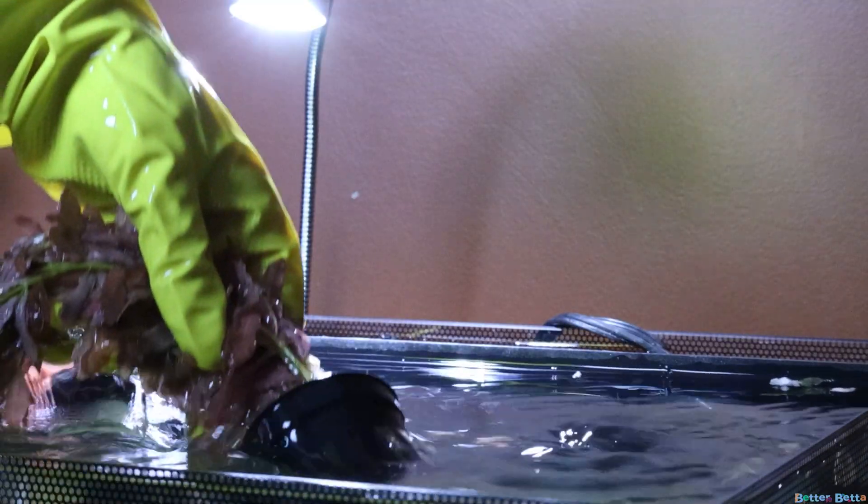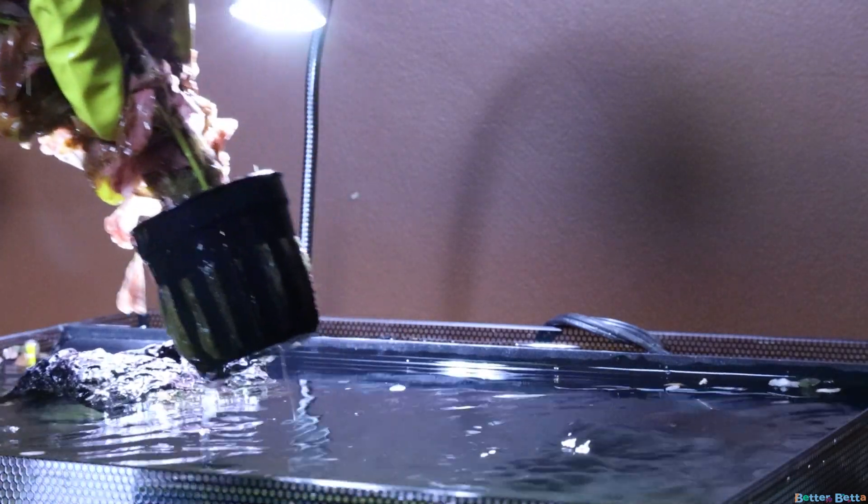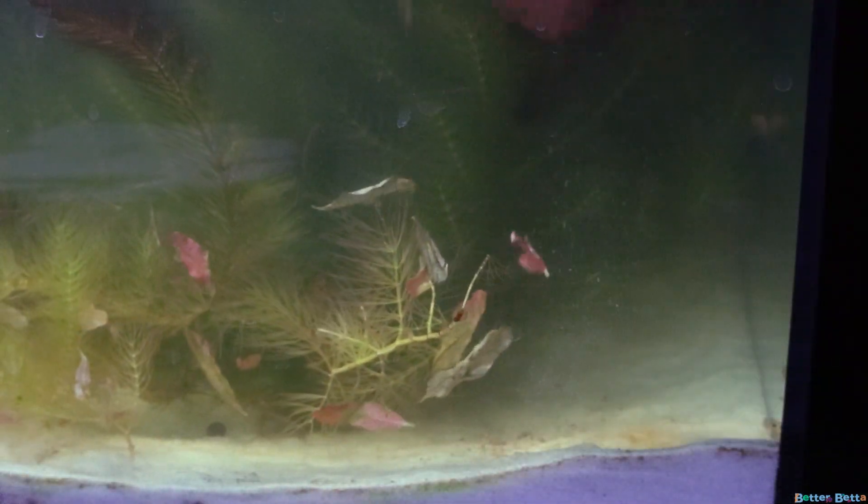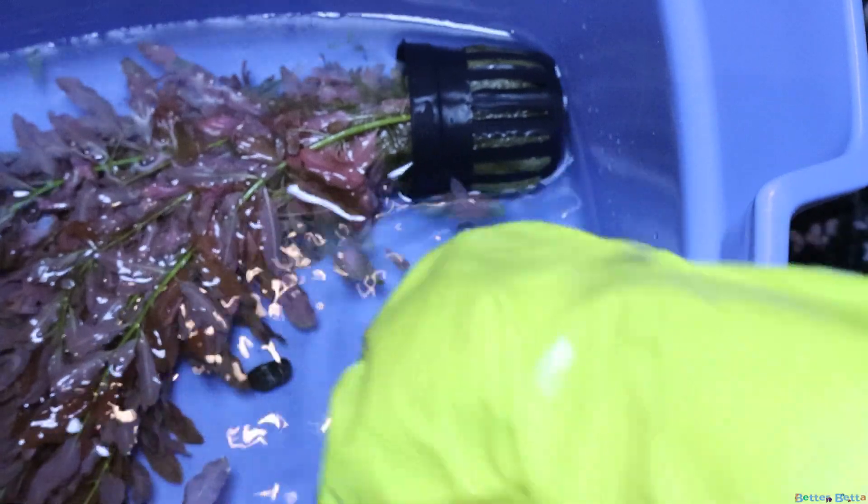Then I'm going and removing any decor that I had in this tank, such as this lava rock, my cholla wood here, my betta's very well-loved floating log.